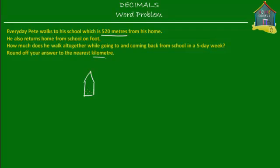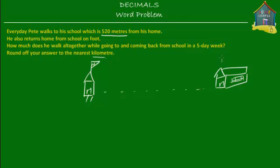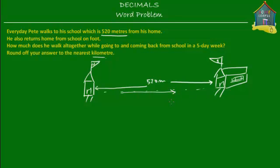Let's say this is Pete's house, marked as H, and somewhere over here is his school, marked as S. The house is 520 meters from the school. He walks 520 meters on foot to school, and then he comes back from school to his home on foot, covering another 520 meters.